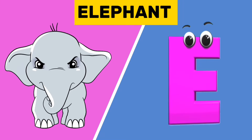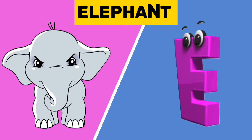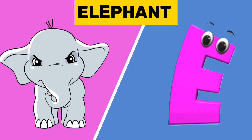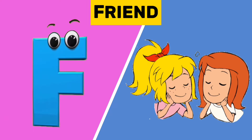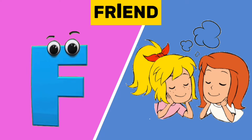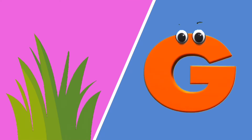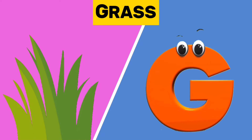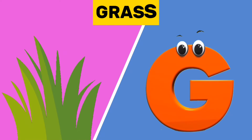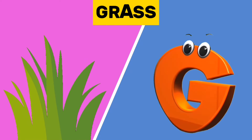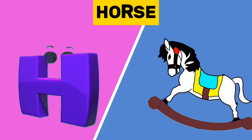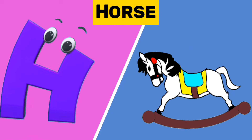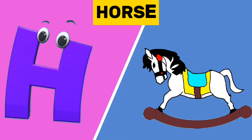E is for elephant. E, e, elephant. F is for friend. F, f, friend. G is for grass. G, g, grass. H is for horse. H, h, horse.